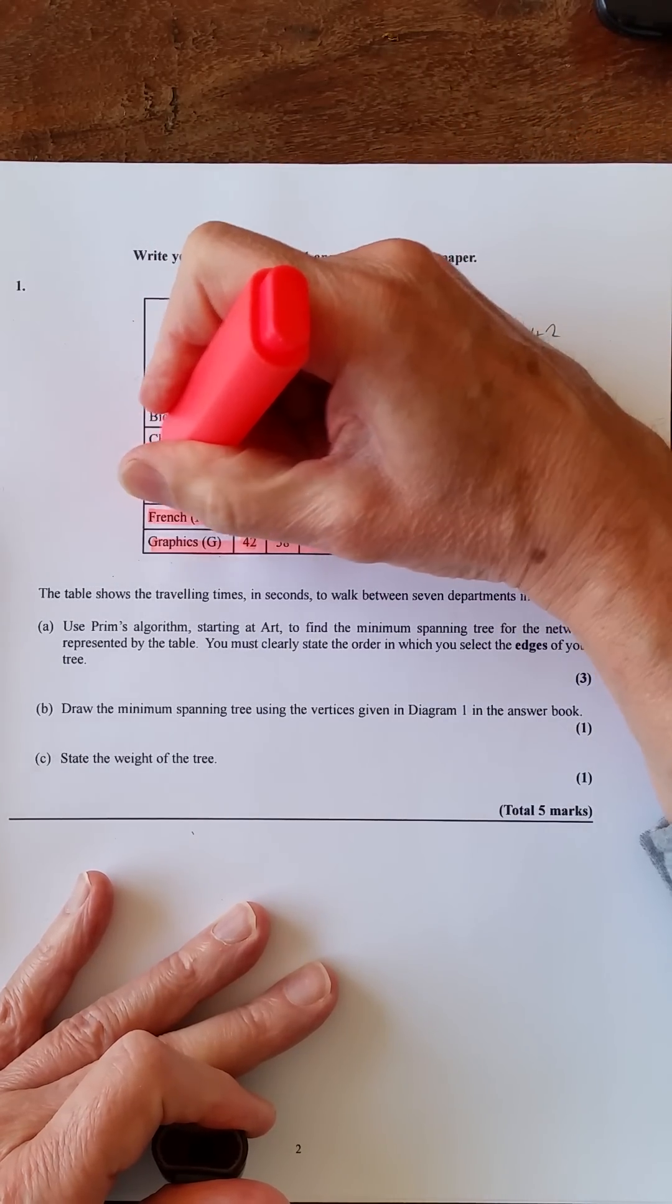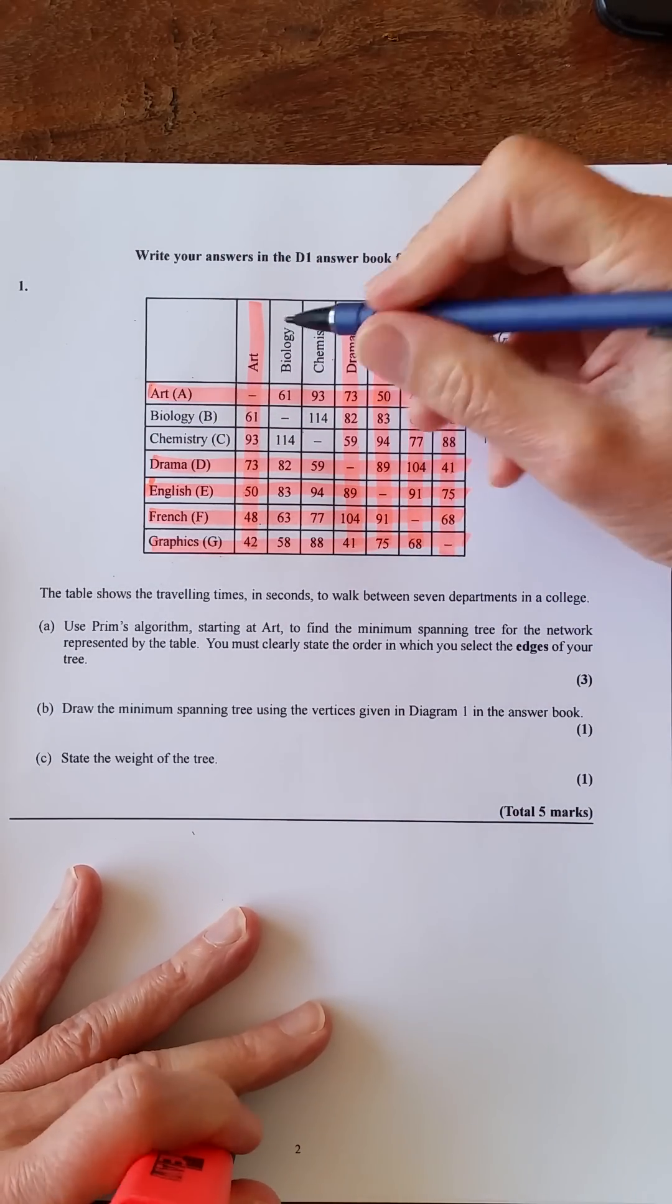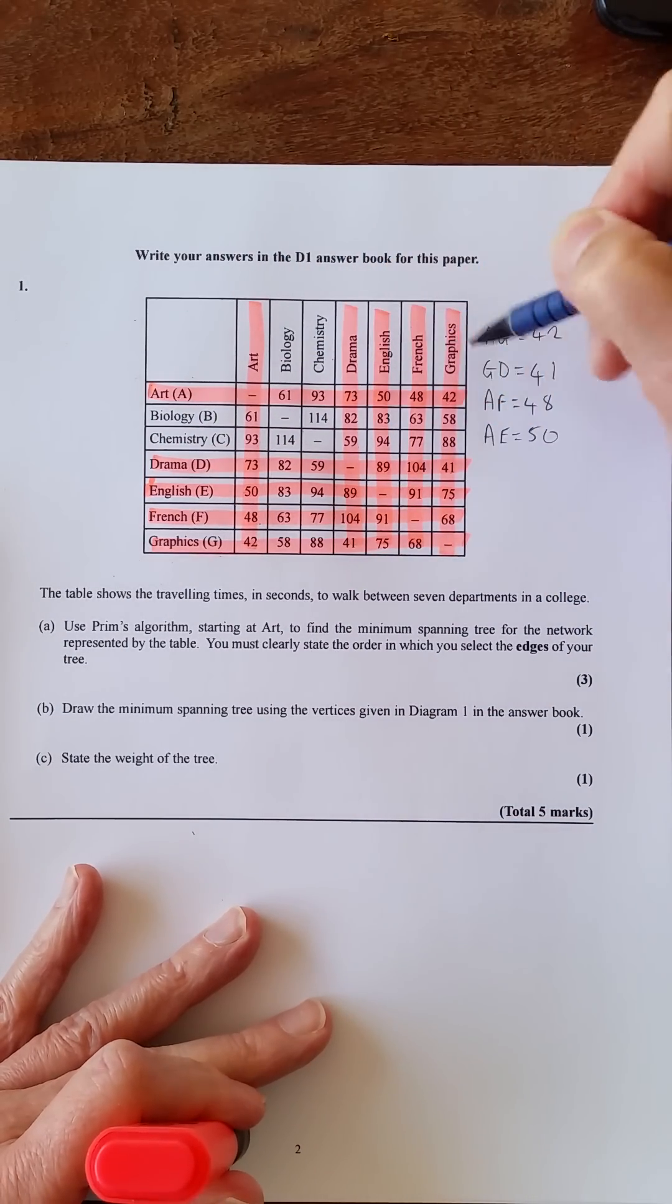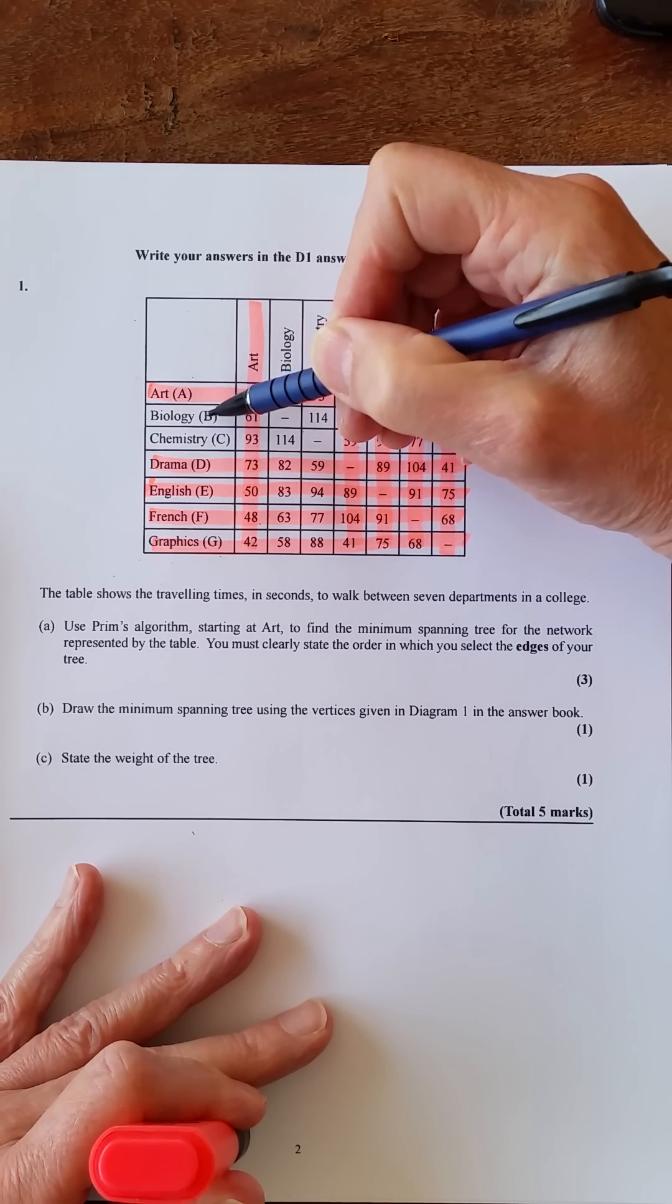And we'll discard this one and we'll discard this one, so we'll look down there. Now we've just got A, D, E, F, and G that we're looking down, and these are the two that's left, biology and chemistry.